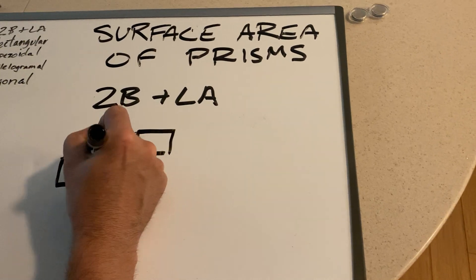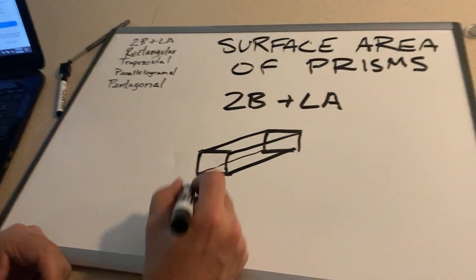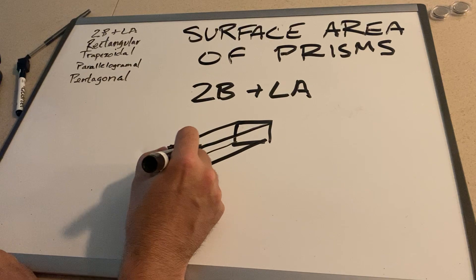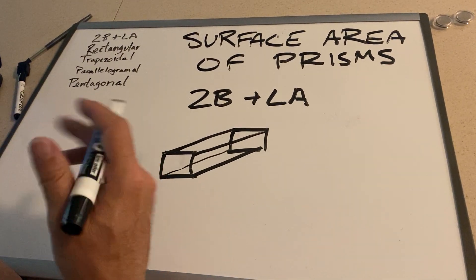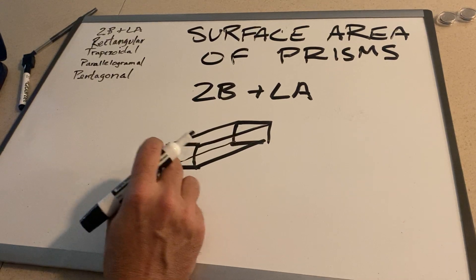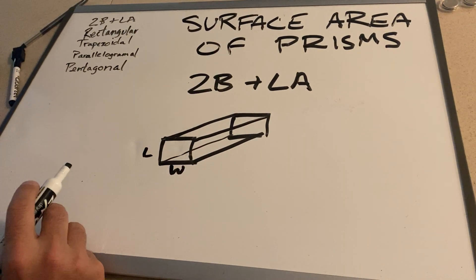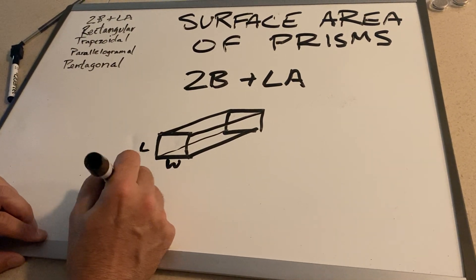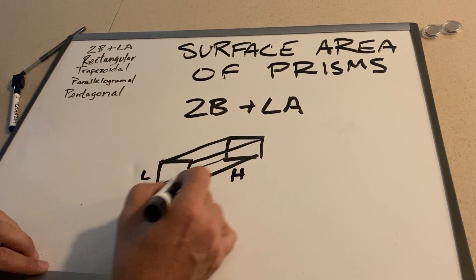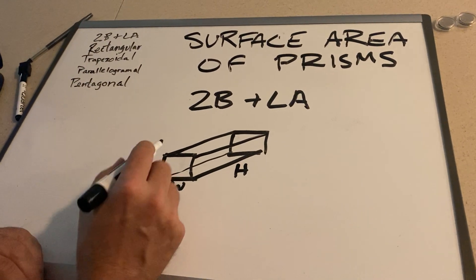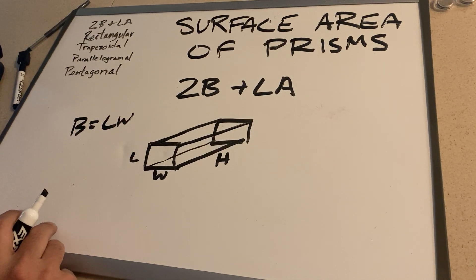The prism looks something like this. Now we need to find the area — we use the exact same formula, but we have a different kind of base. So instead of using one-half BH for a triangular base, we're going to use length times width for this rectangular base. And then this over here is still going to be the height — length times width and height. For B, the area of the base, that's just length times width. It's just a rectangle.